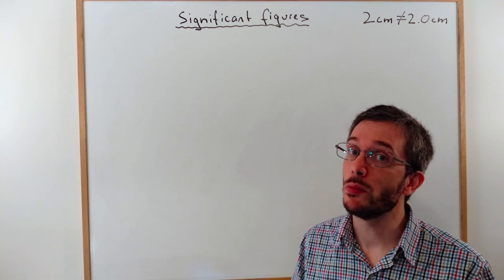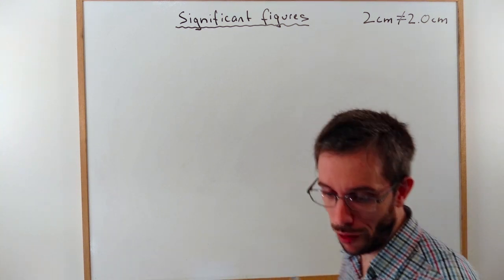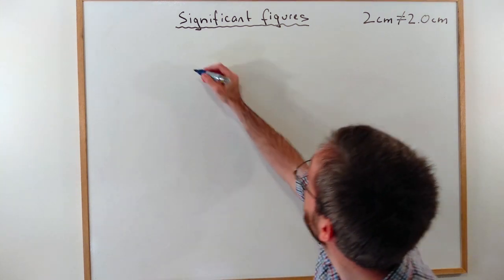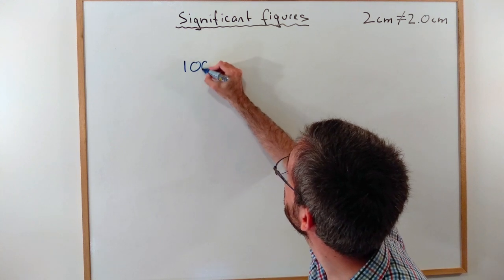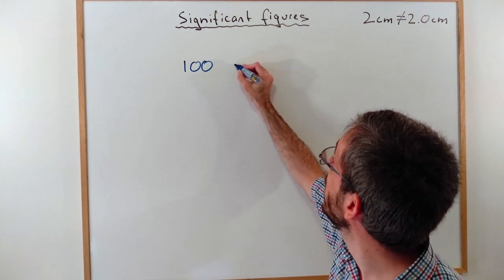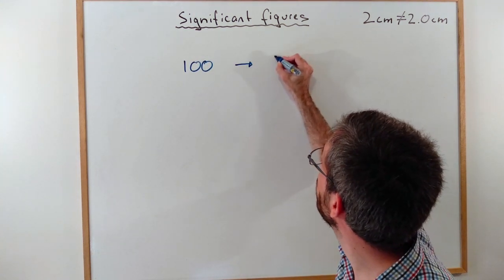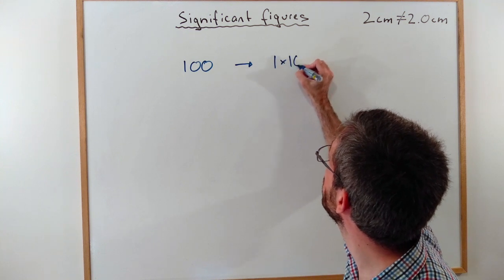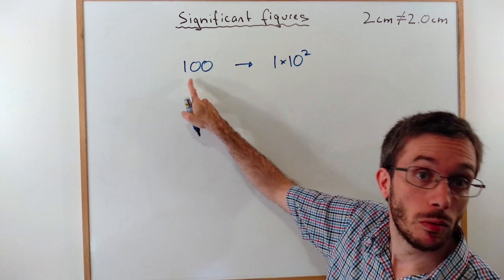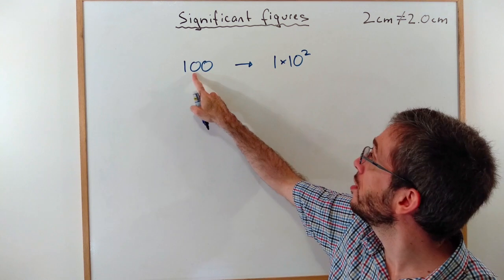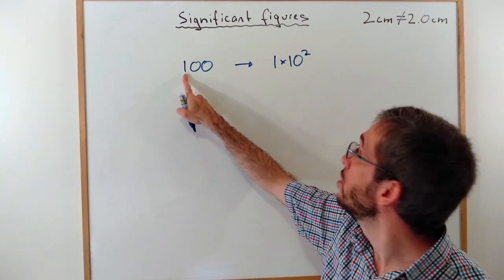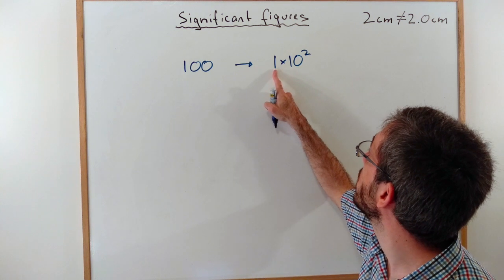So we should keep the same amount of significant figures. For example, if I convert 100 to scientific notation, I would write 1 times 10 to the 2. Why? 100. There is no point here. So these zeros don't count, only have one significant figure. So in my number here, I only write one significant figure.